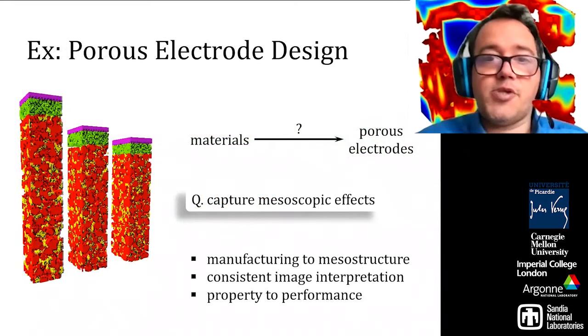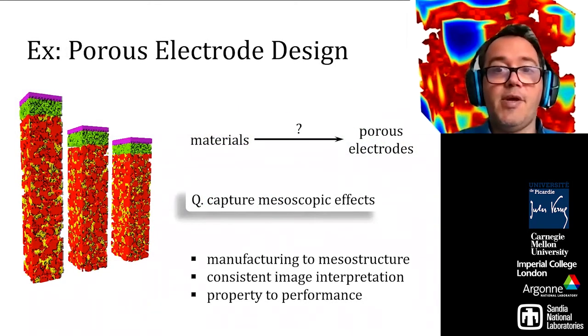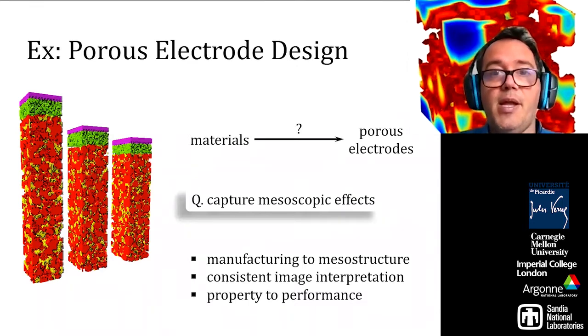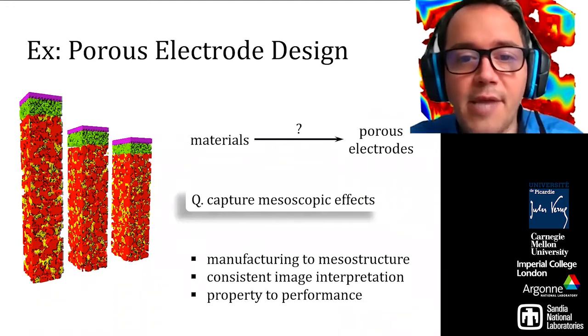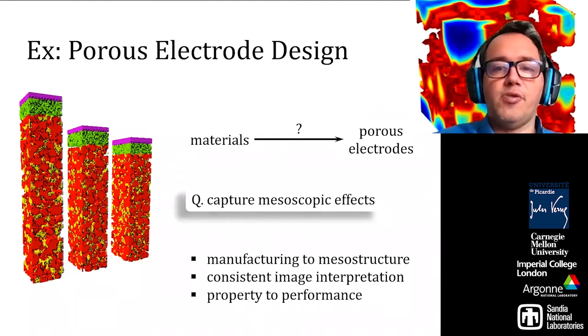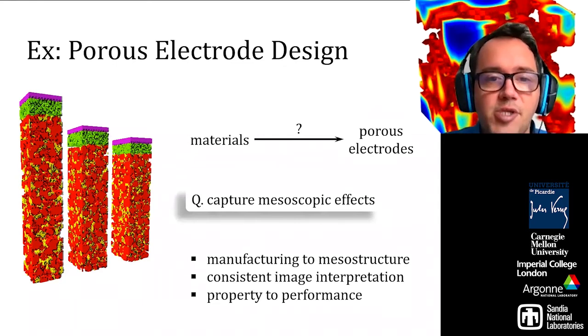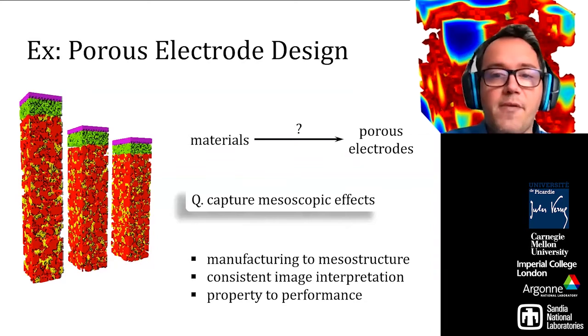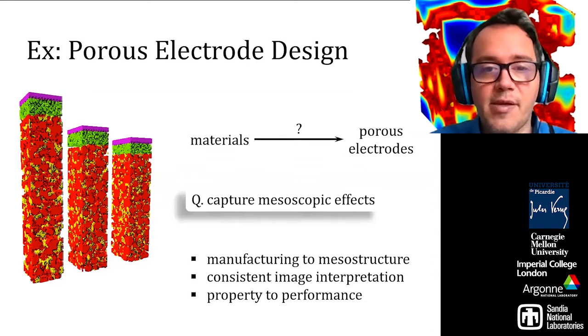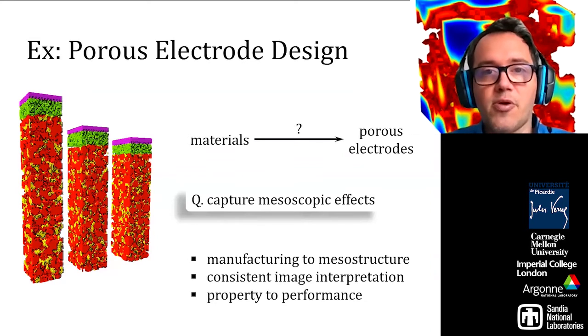The design of porous electrodes using given electrode and electrolyte materials is a representative electrochemical science to which machine learning can contribute. Instead of a purely database connection from materials to electrode performance, the challenge for scientific machine learning is to be able to capture the mesoscopic effects that limit the predictability of the porous electrode response.